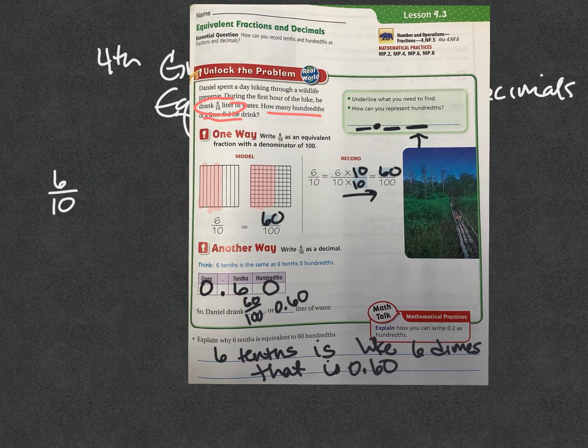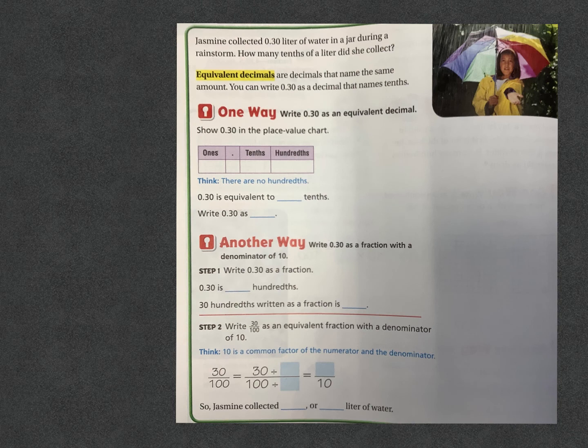For me, I remember the tenths place and the hundredths place value because I know in money that's my dimes and that's my pennies — 10 cents for a dime, 100 cents for a penny to make a dollar. Let's look at another example.